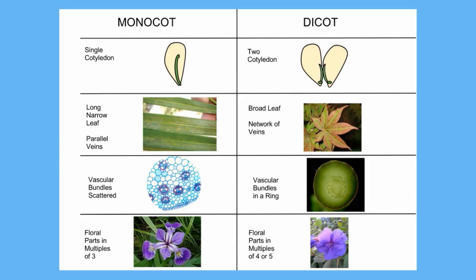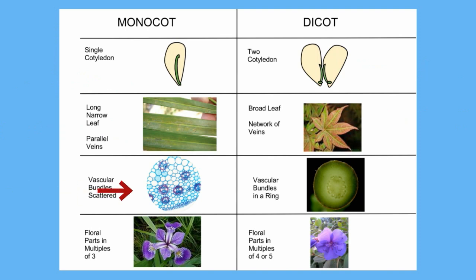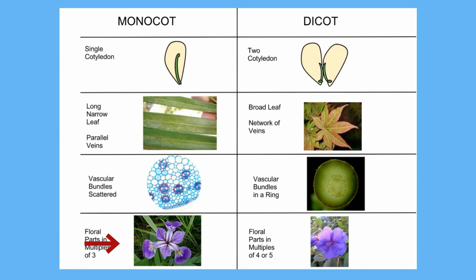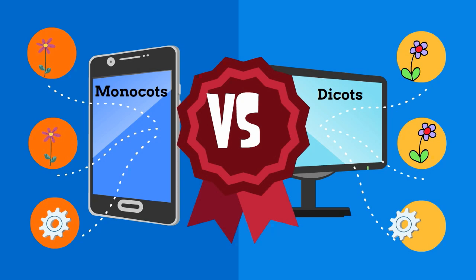So in summary, let's take a look at how they are different. Monocots have a single cotyledon; dicots have 2. The leaves of a monocot are long and narrow with parallel veins, while a dicot has broad leaves and a network of veins. The vascular bundles of a monocot are scattered, and in a dicot they are in a ring. Finally, monocots have flower petals in multiples of 3, and dicots in multiples of 4 or 5. So there we go — the two major types of angiosperms: monocots and dicots.